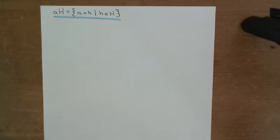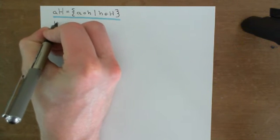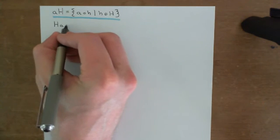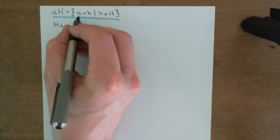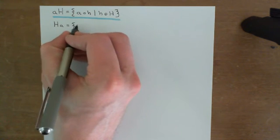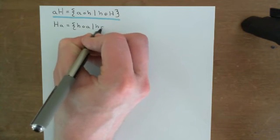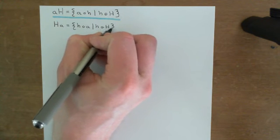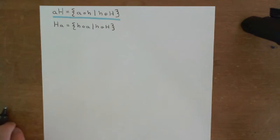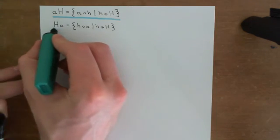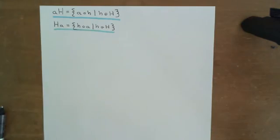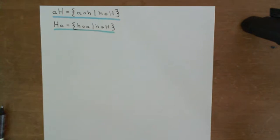The definition of a right coset of H under a is very much so related. It's written capital H little a — the right coset of capital H under little a. Here what we do is switch from left multiplication by the element little a to right multiplication by the element little a. So this is all things of the form little h composed with little a, where little h is an element of capital H. You go through every single element of this subgroup capital H and right multiply every single one by little a, and that is what is meant by the right coset of H under a.